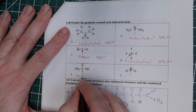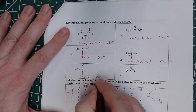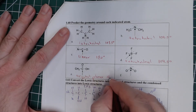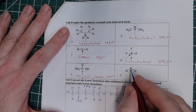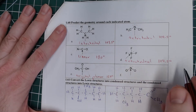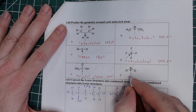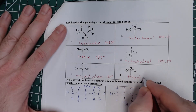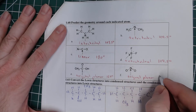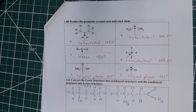That carbon with three domains is trigonal planar at 120 degrees. This nitrogen has three domains including a lone pair, so it is also trigonal planar at 120 degrees. Right now we're doing this with Lewis structures, but shortly you'll need to do the same thing with skeletal structures, which I'll show you in a bit.